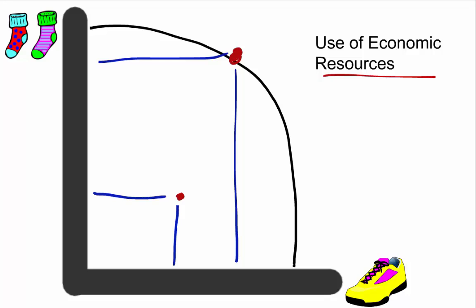So in this instance, if we're operating at point A rather than point B, we can say that there's an underuse of economic resources. However, if we then shift point A to point B, we're going to be using the maximum amount of economic resources available to us. So as a result, we are using everything in our potential and we're using at maximum efficiency.